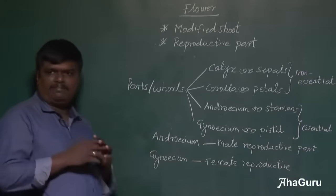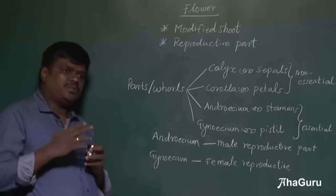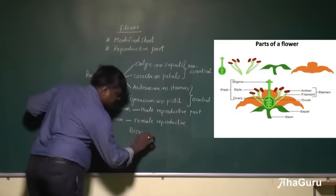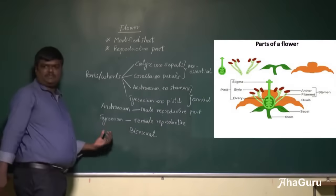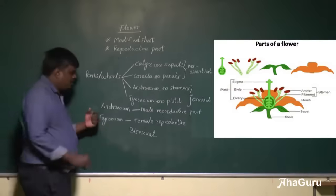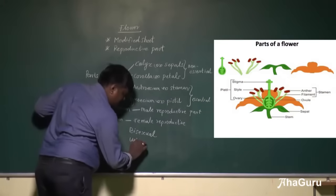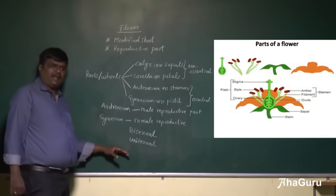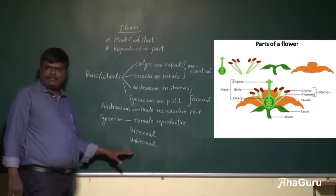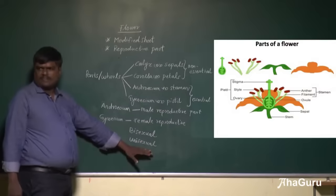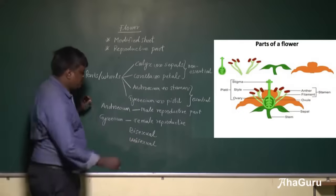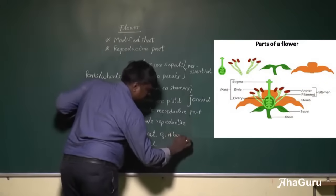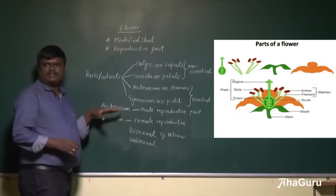Sometimes both male and female reproductive parts are present in the same flower. Such flowers are called bisexual flowers. Bisexual flowers means both male and female are present in the same flower. For example, hibiscus is a bisexual flower — it has both male and female sex organs in it.